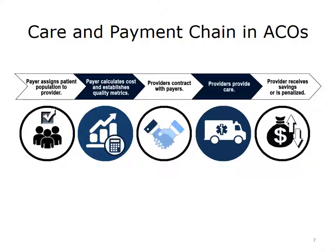The following describes the patient assignment, care, and payment chain relative to the ACO model. A health care payer assigns a patient population to a provider. The payer then calculates the future cost of providing care to this patient population and establishes quality metrics and standards. Providers then contract with these payers to provide care and receive payment based on the calculations of expected cost and ability to meet the quality goals. At the end of the period of the contract, the provider either receives a portion of the savings or is penalized.